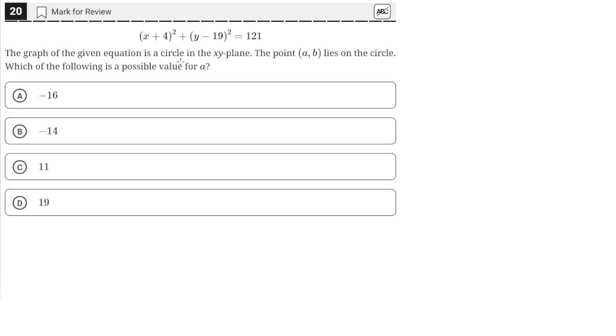The graph of the given equation is a circle in the xy-plane. The point (a,b) lies on the circle. Which of the following is a possible value for a?